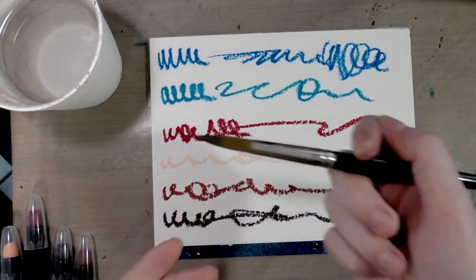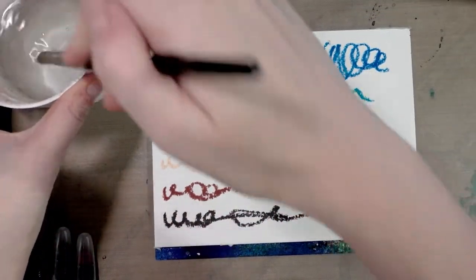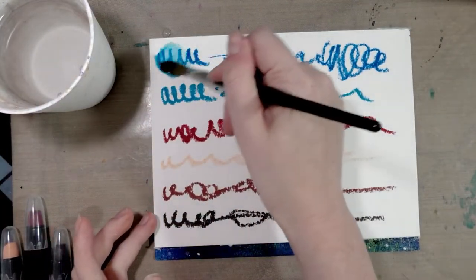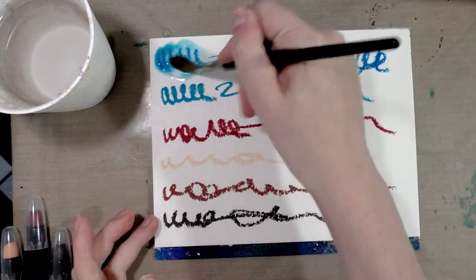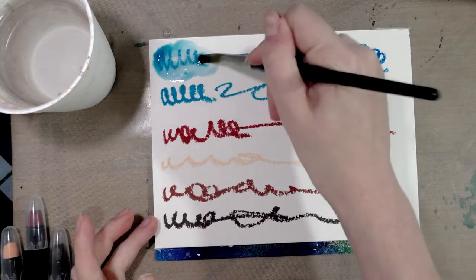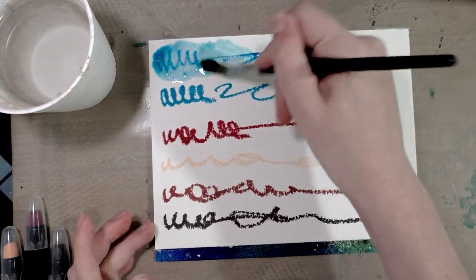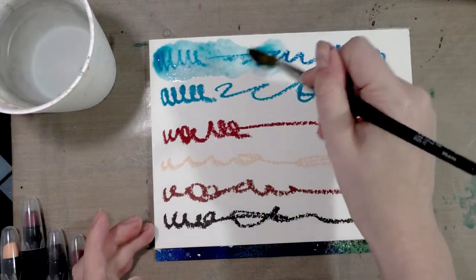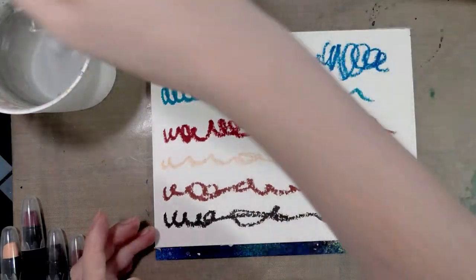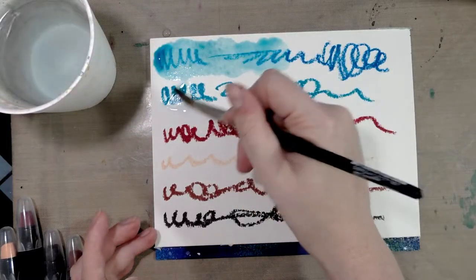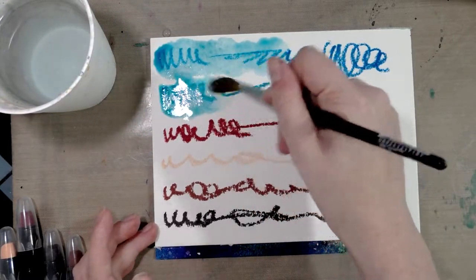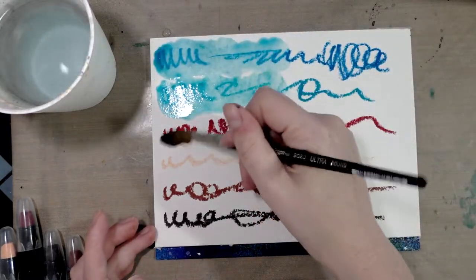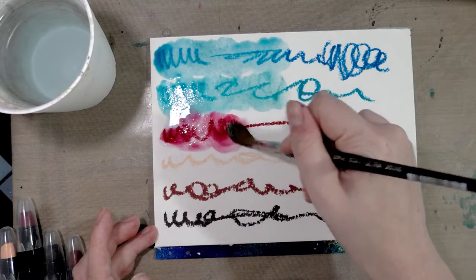Since we're working on watercolor paper, let's do some water reactivity tests. Here is a synthetic brush and a cup of clean water. I'm just going to scrub it in. It does take a fair bit of scrubbing to activate the color, and then the color is a little bit anemic with a direct water application. Don't worry, we're going to test this in a couple of different ways.